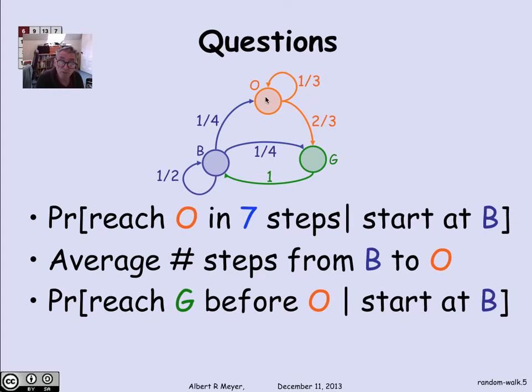You could, with probability a quarter, go there in one step. But with probability an eighth, you go there in three steps, and so on. You can calculate, again, explicitly and easily enough, what the average number of steps from B to O is in this simple example. And we'll shortly remark about general ways to solve that problem.